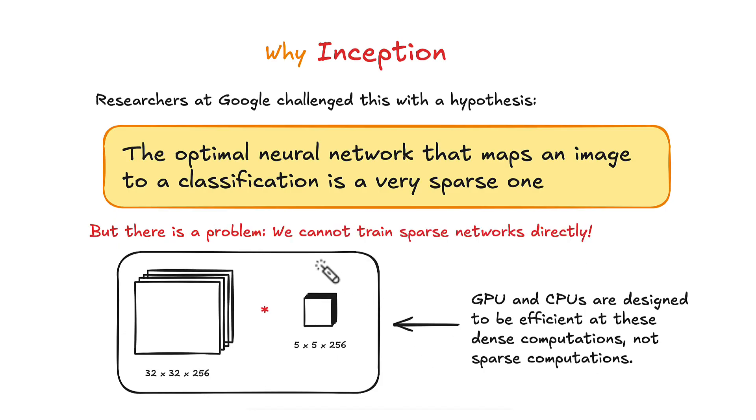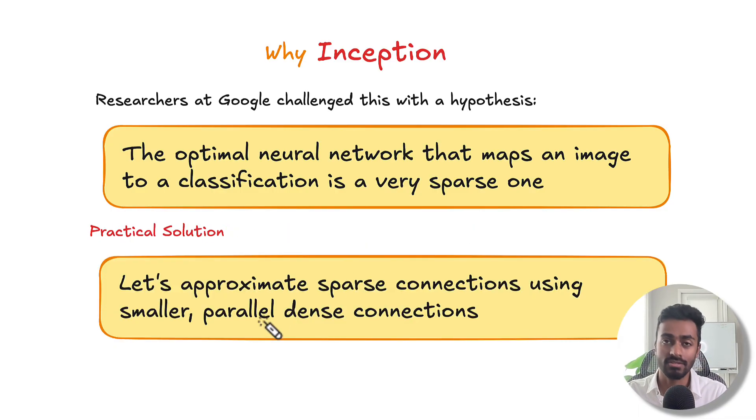But the problem here is that we can't really train sparse networks directly. This is because CPUs and GPUs as they have evolved today are very efficient at dense operations and dense computations and not really sparse computations. So we want to make use of the hardware that exists today for dense computations. Hence the practical solution is to approximate the sparse computations using smaller parallel dense computations.